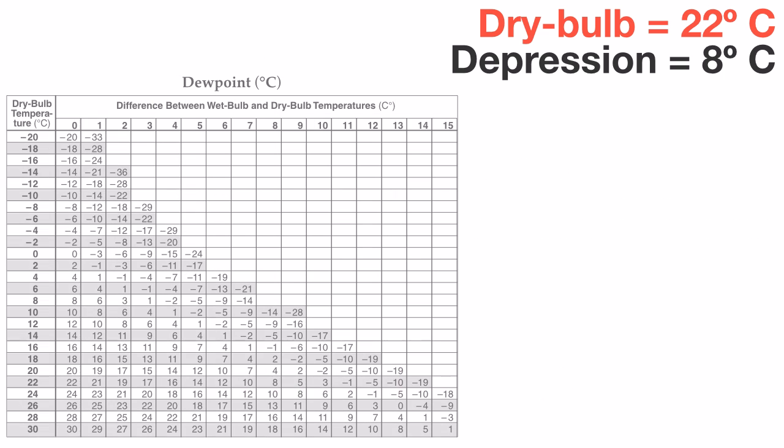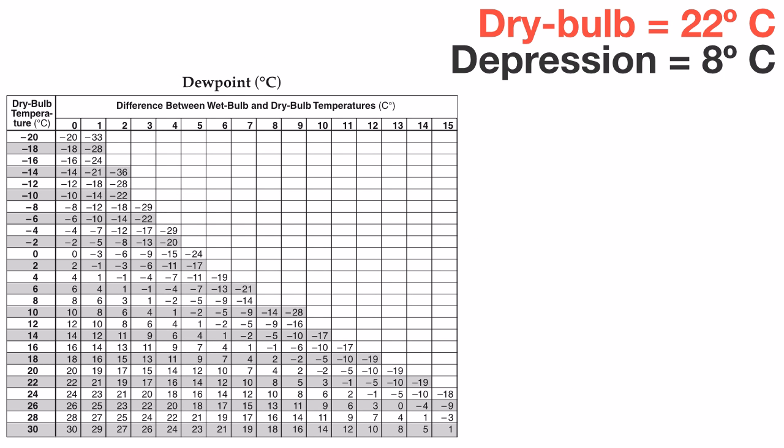If we want to find the dew point, we would do the exact same process but using the dew point chart. I'll find my dry bulb on the left, which is 22, and my depression or difference on the top, which is eight. And where those two cross, we have our dew point, which in this case is eight degrees Celsius.